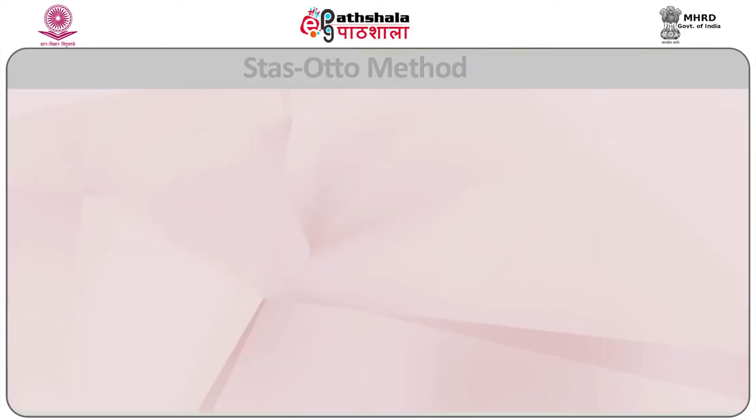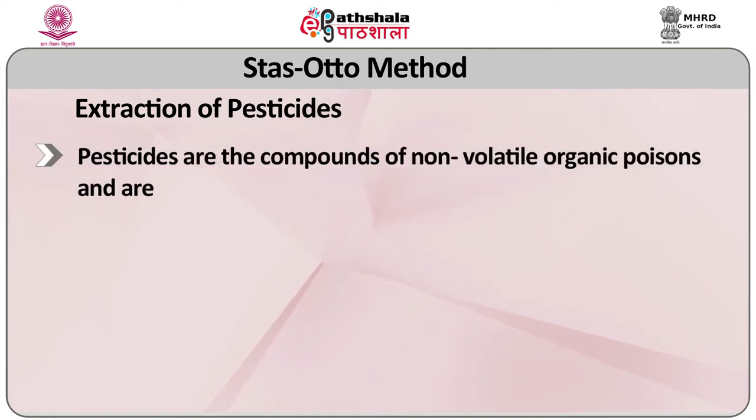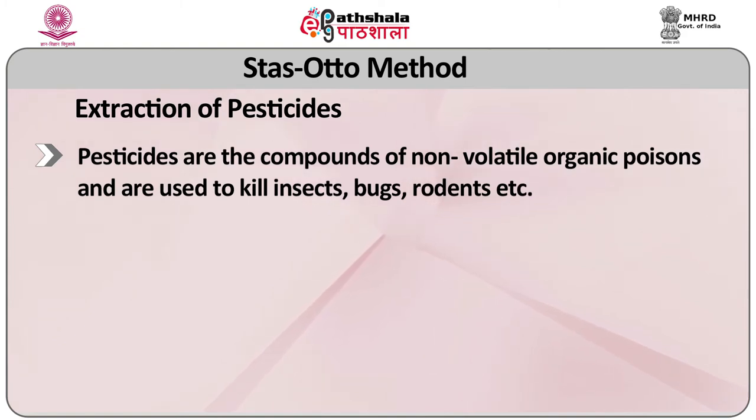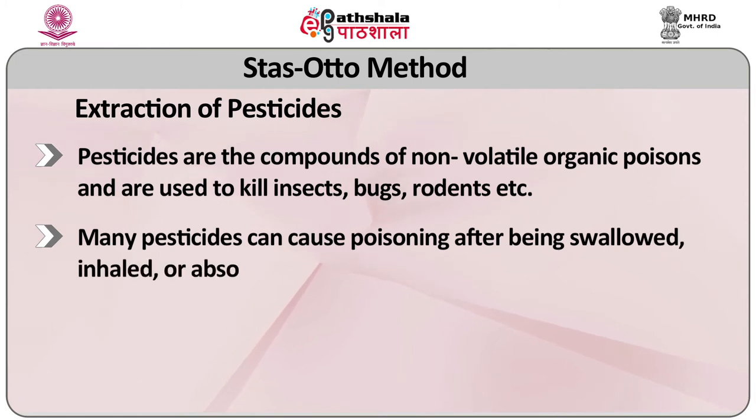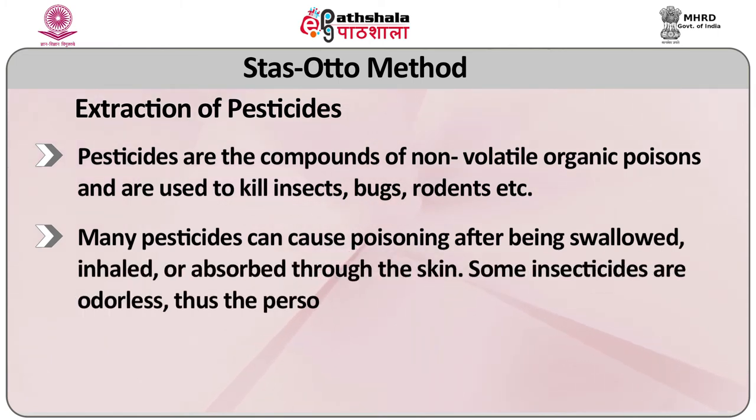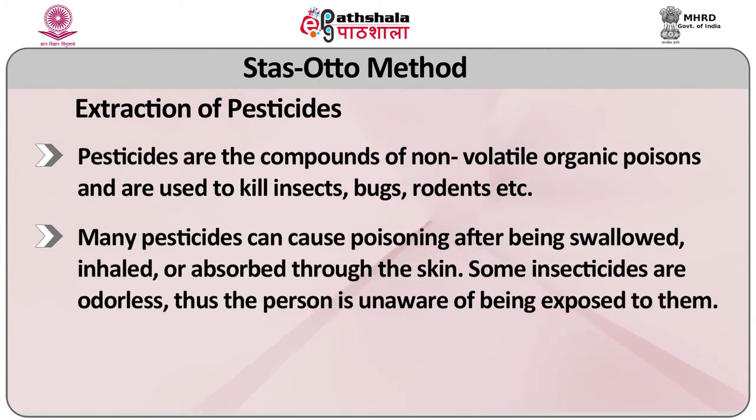Various procedures are employed for the extraction of pesticides depending on the matrices. Pesticides are compounds of non-volatile organic poisons used to kill insects, bugs, rodents, etc. Many pesticides can cause poisoning after being swallowed, inhaled, or absorbed through the skin. Some insecticides are odourless, so the person is unaware of being exposed. Most insecticides cause certain nerve fibres to fire erratically, causing many organs to become overactive and eventually stop functioning. As they are easily available and cheap, they are used for suicidal purposes despite their unpleasant taste and painful death. These compounds are also used for homicidal purposes by mixing with alcohol, especially toddy which masks their smell, or with other foods. Accidental poisoning also occurs due to contamination and leakage.